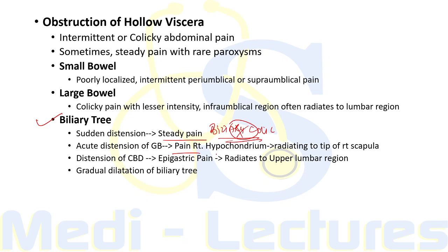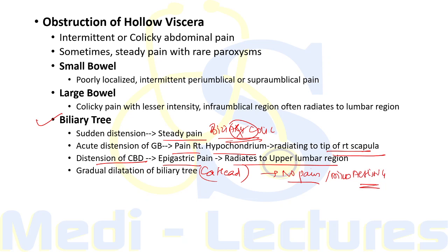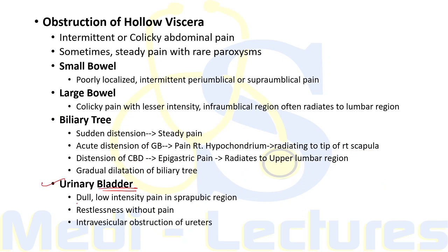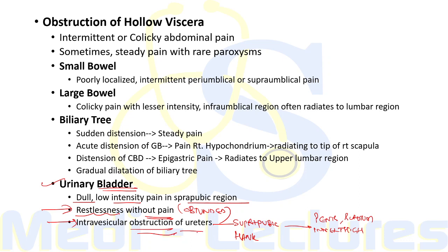Acute distension of the gallbladder causes pain in the right hypochondrium radiating to the tip of the right scapula. Distension of the common bile duct causes epigastric pain radiating to the upper lumbar region. Gradual dilatation of the biliary tree, as in carcinoma of the head of pancreas, causes no pain or a very mild aching sensation in the epigastric region. Urinary bladder obstruction causes dull low-intensity suprapubic pain; obstruction of ureters causes severe pain in the suprapubic and flank region radiating to the penis, scrotum, and upper thigh.